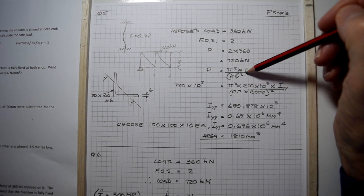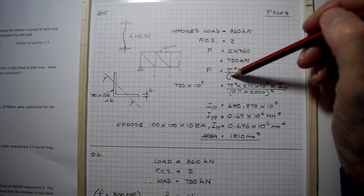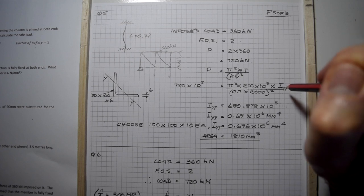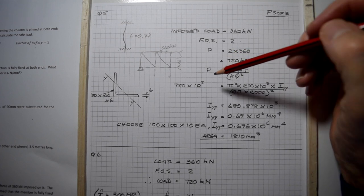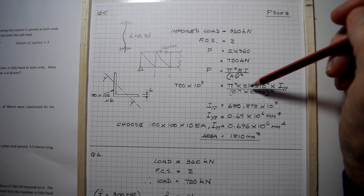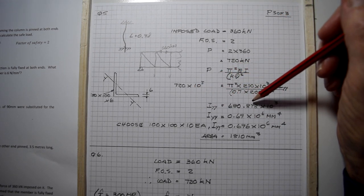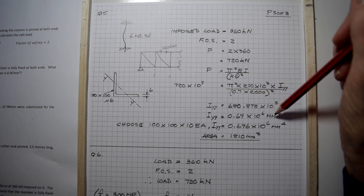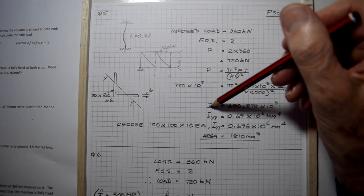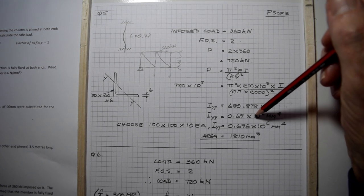Putting that into Euler's formula taking account of the factor for end fixity, we're setting out to find what I_yy is. We know what P is. The I_yy we require to satisfy this equation is 680,000 millimeters to the fourth, or 0.69 times 10 to 6 millimeters to the fourth.